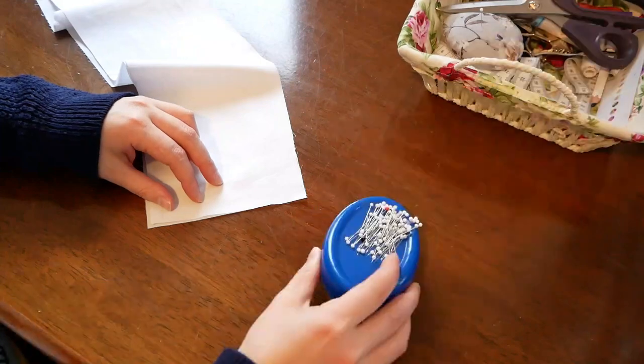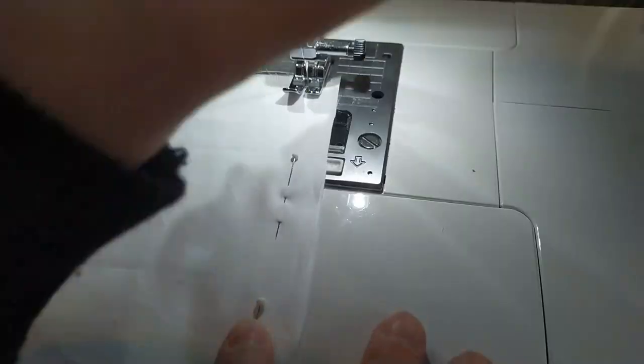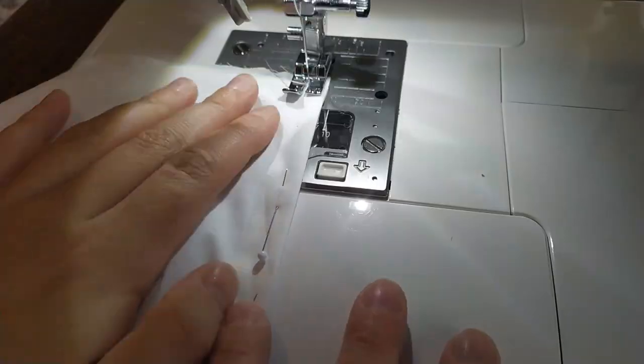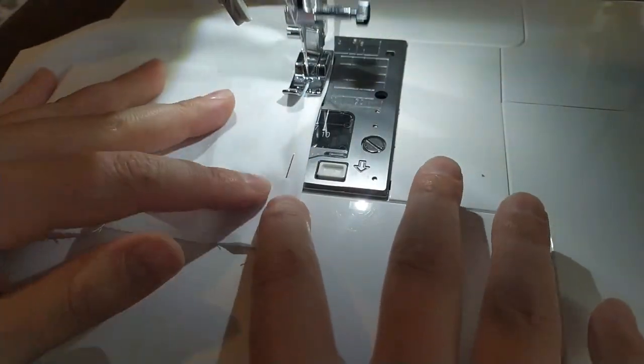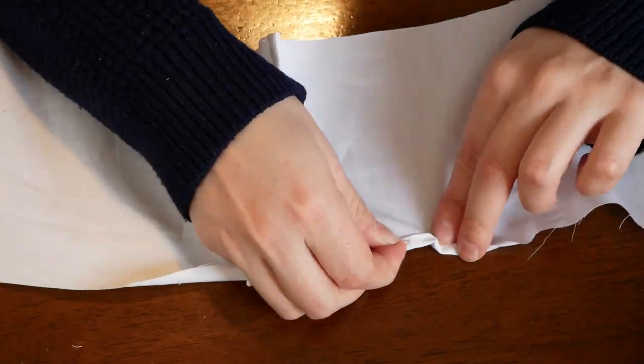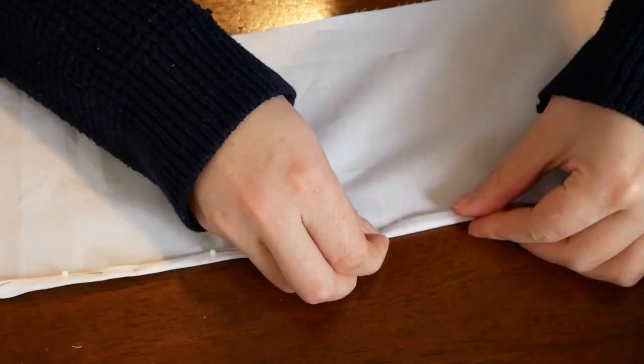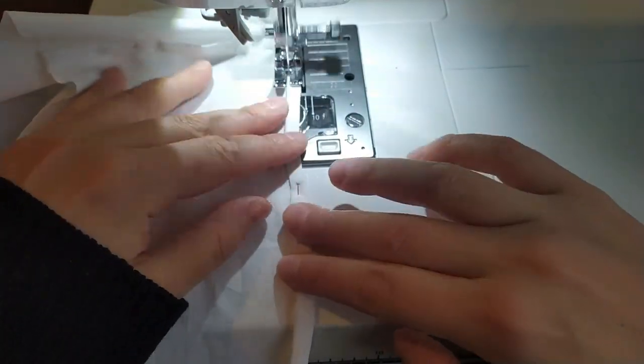In the next step, we will make the ruffle. Pin the short side of the ruffle together and join the ends with a French seam. Make a thin double folded hem: fold the bottom edge of the ruffle fabric towards the wrong side of the fabric twice and then sew it on your sewing machine.